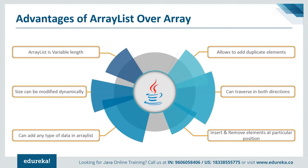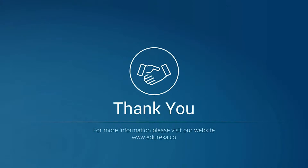Now let's jump into the last topic — advantages of ArrayList over Array. First, ArrayList is variable length. Arrays are fixed length; you cannot change the size of the array once they are created. But ArrayList is variable length — it can grow and shrink dynamically. Next, the size of the array can be modified dynamically: when you add elements the size increases, and if you remove elements the size automatically decreases. Next, you can add any type of data — maybe list, union structure, etc. — and it also allows you to add duplicate elements in the list. You can traverse an ArrayList in both directions — forward and backward — using ListIterator, and it also allows you to insert and remove elements at a particular position. I hope you understood the concept of ArrayList and the difference between Array and ArrayList. That's all for the session. Thank you and have a nice day.